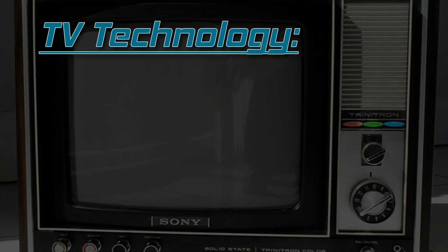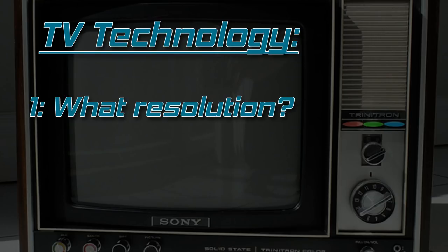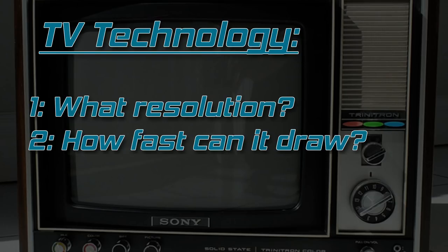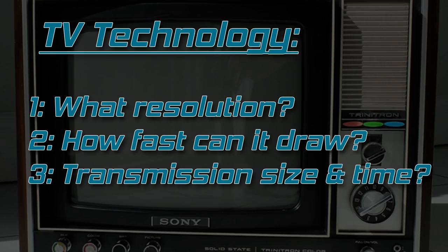In addition to the refresh rate used for the image, there was the makeup of the image itself. What resolution would it be? How quickly could a vacuum-tubed CRT television draw to the screen, and how fast could the picture be transmitted and received by the TV? What about the idea of showing a frame twice? RAM didn't exist back then to store an image.